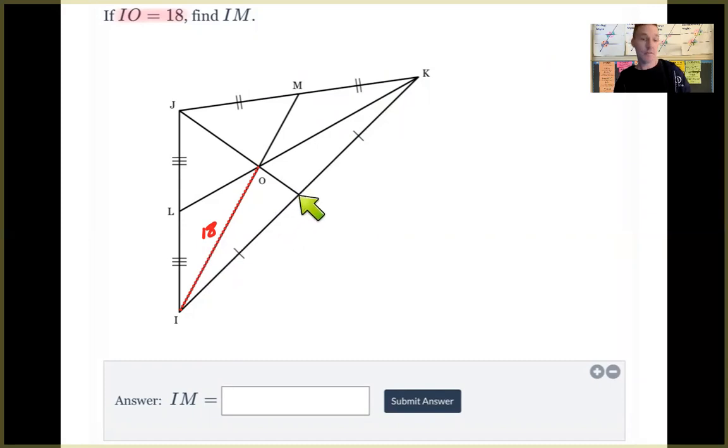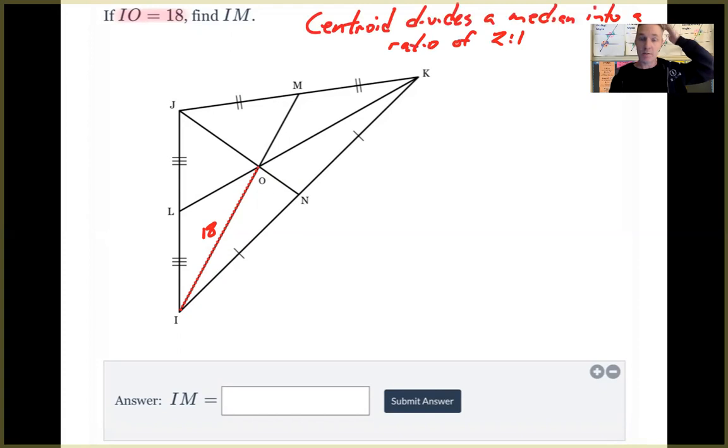So if that's a midpoint and then look, KM is congruent to JM. So that must be a midpoint. And then JL is congruent to IL. So that also must be a midpoint. So these are all three midpoints. Then these have to be all medians. Therefore they're intersecting at the centroid. So then I know that this has to be in a ratio of two to one, because it is a centroid in fact. And we know a centroid divides a median into a ratio of two to one.